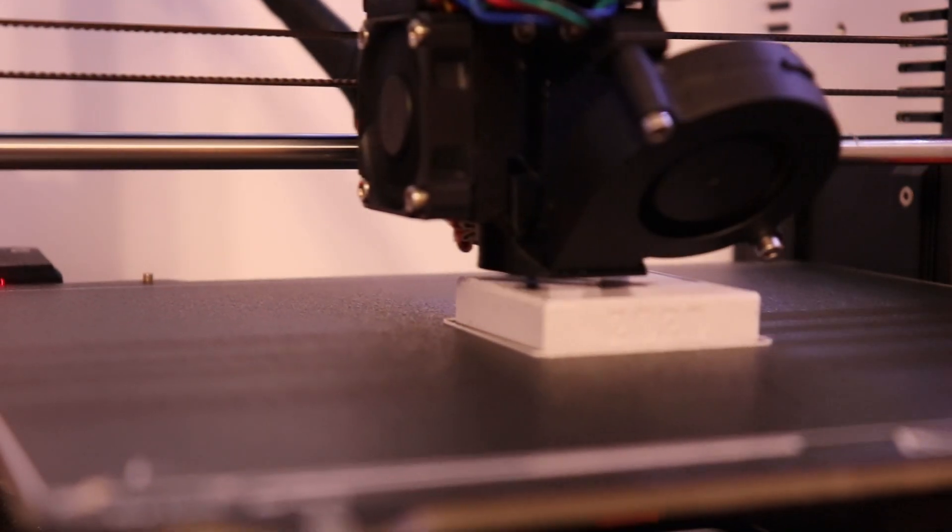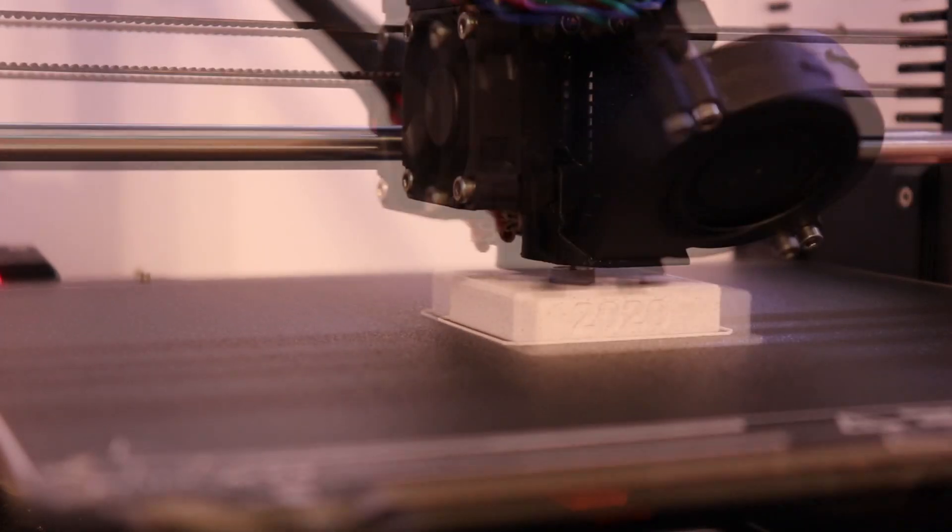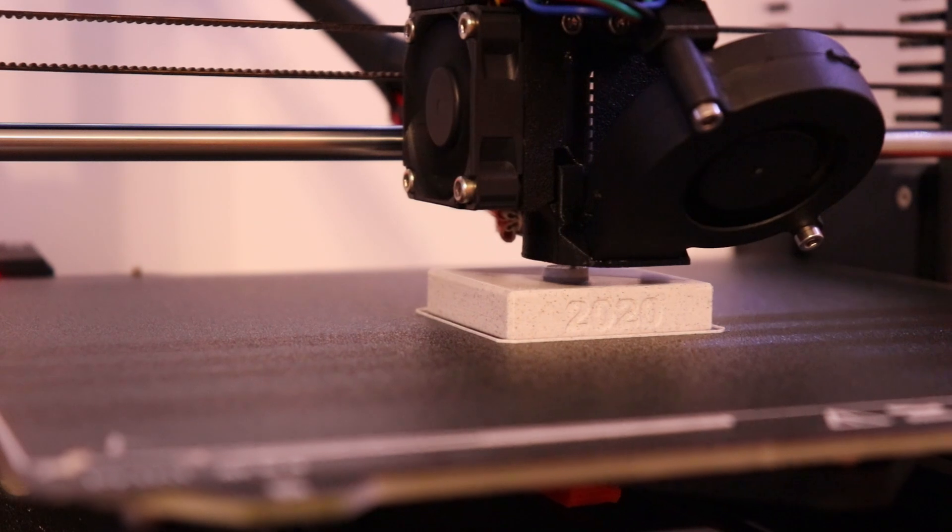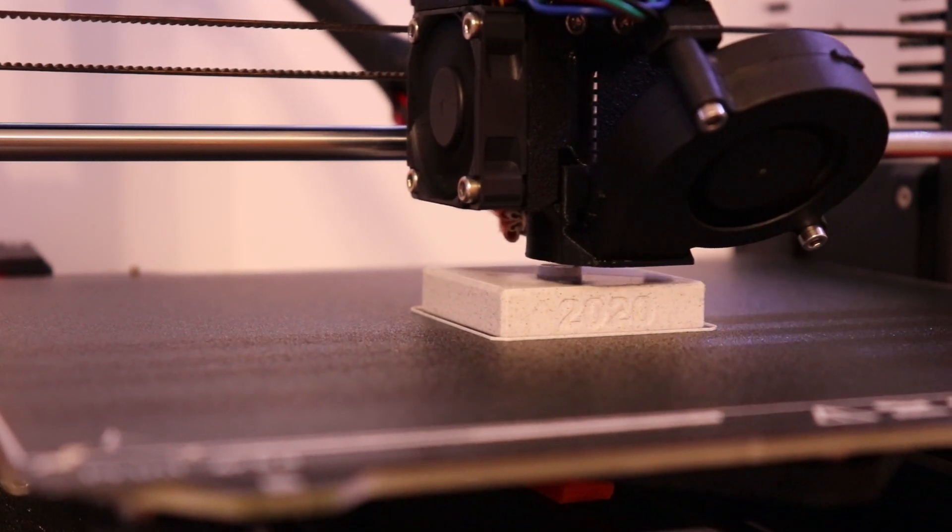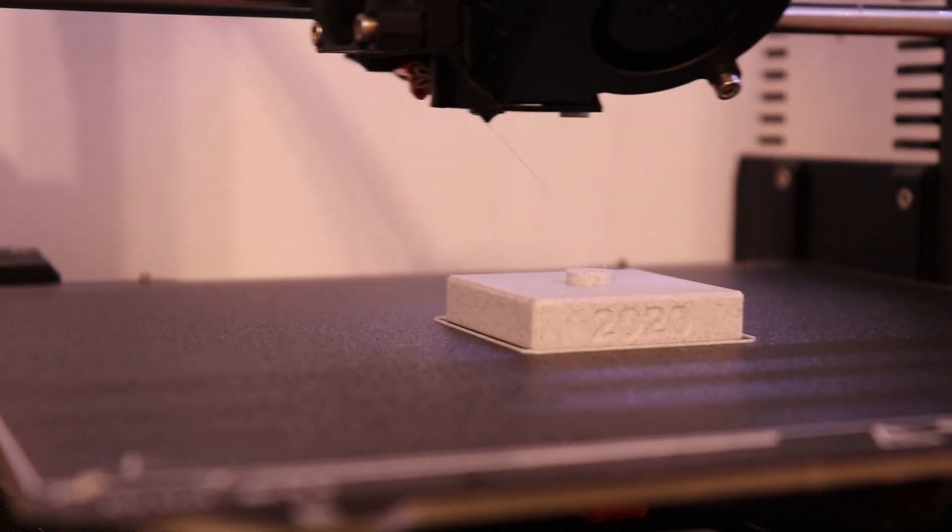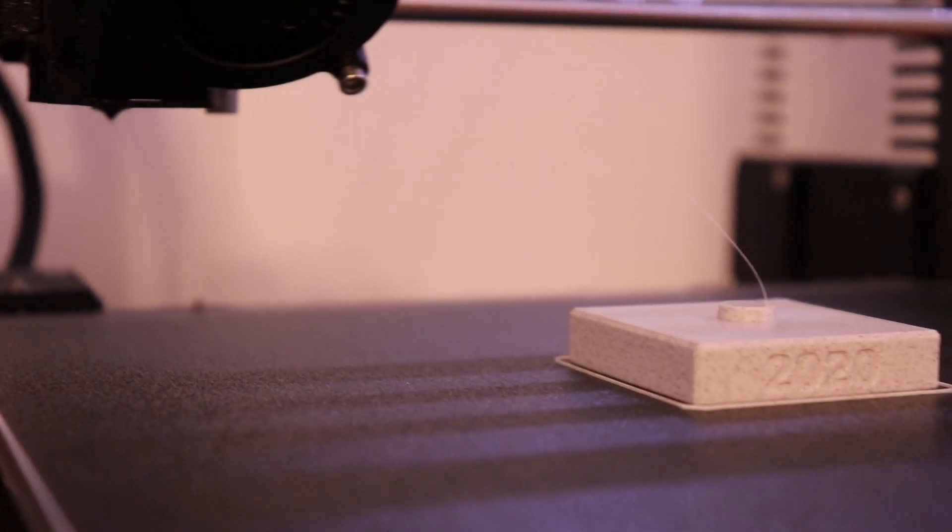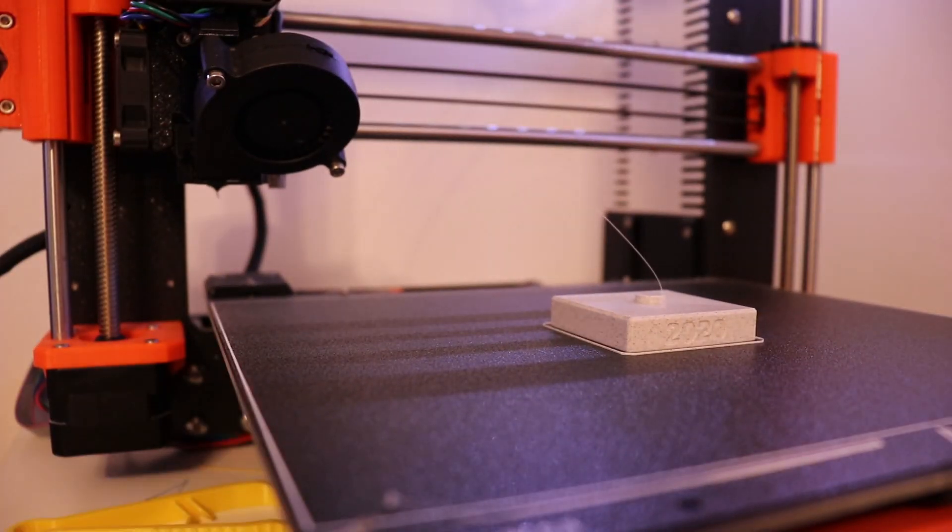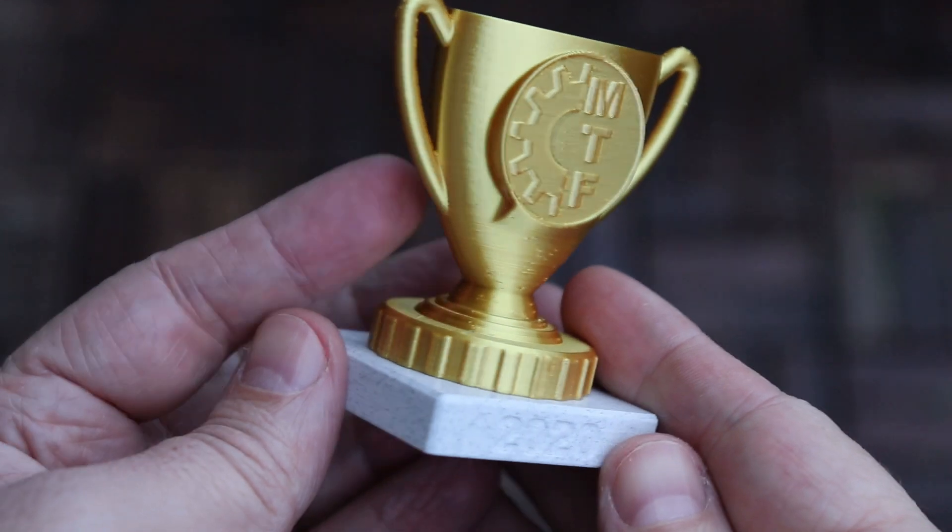But we also need the bottom part which will be in marble PLA filament. And I used here almost half of the sample filaments. Here you can see the centering pin which will be used only to position the upper part, but they will be glued to each other.